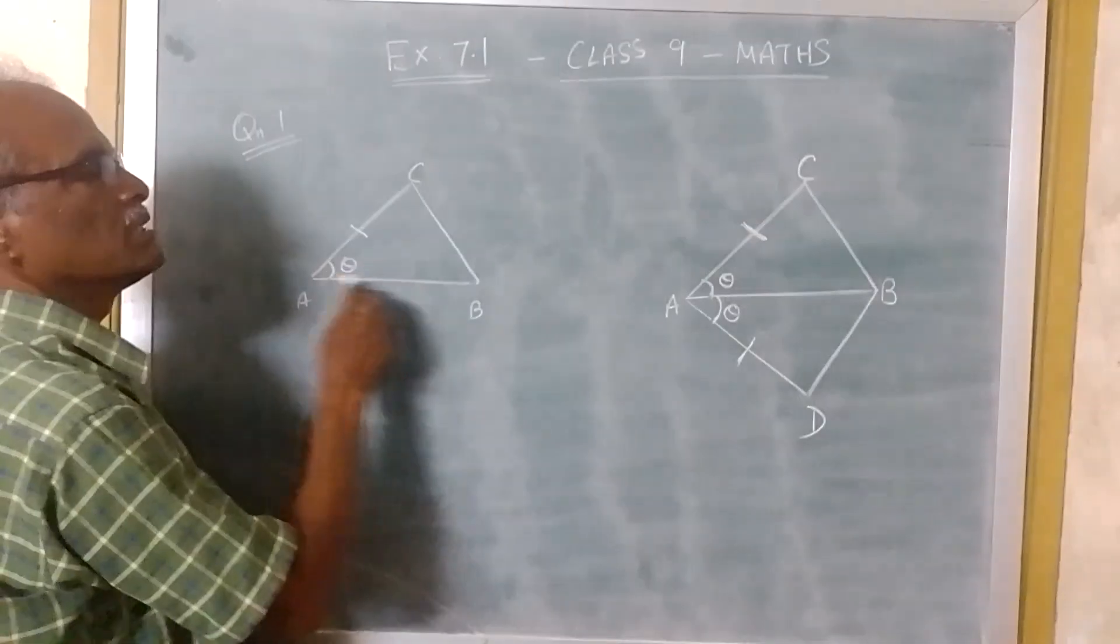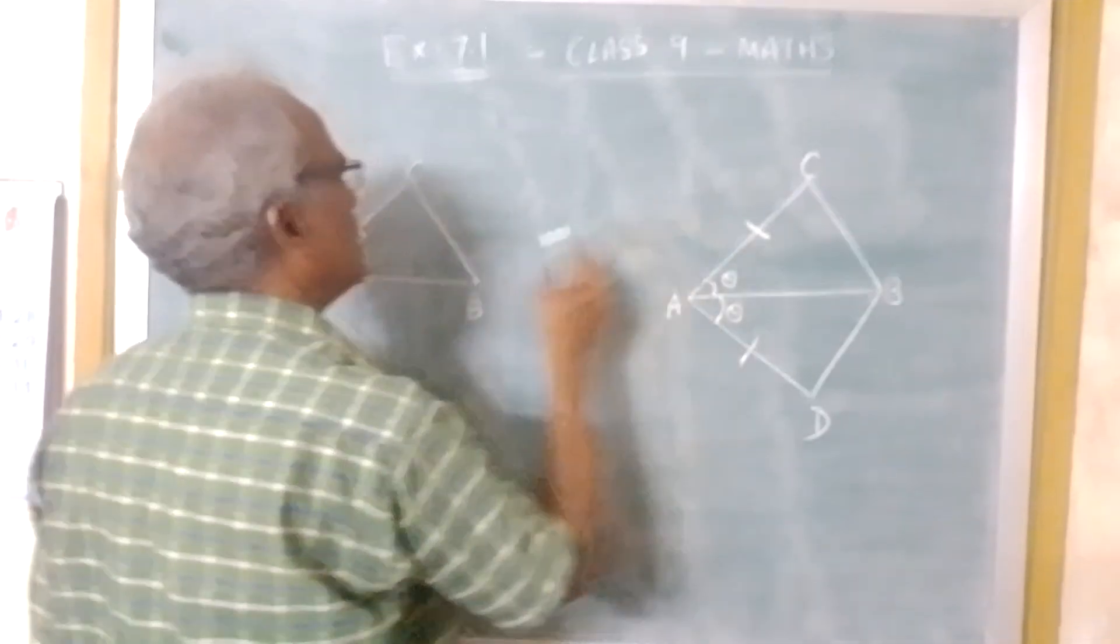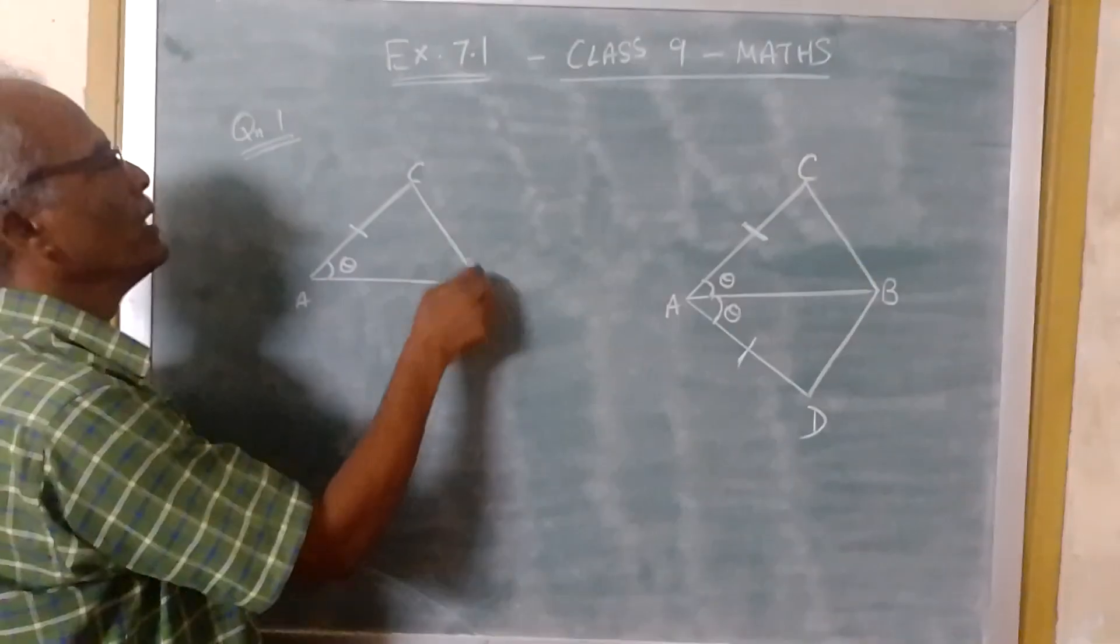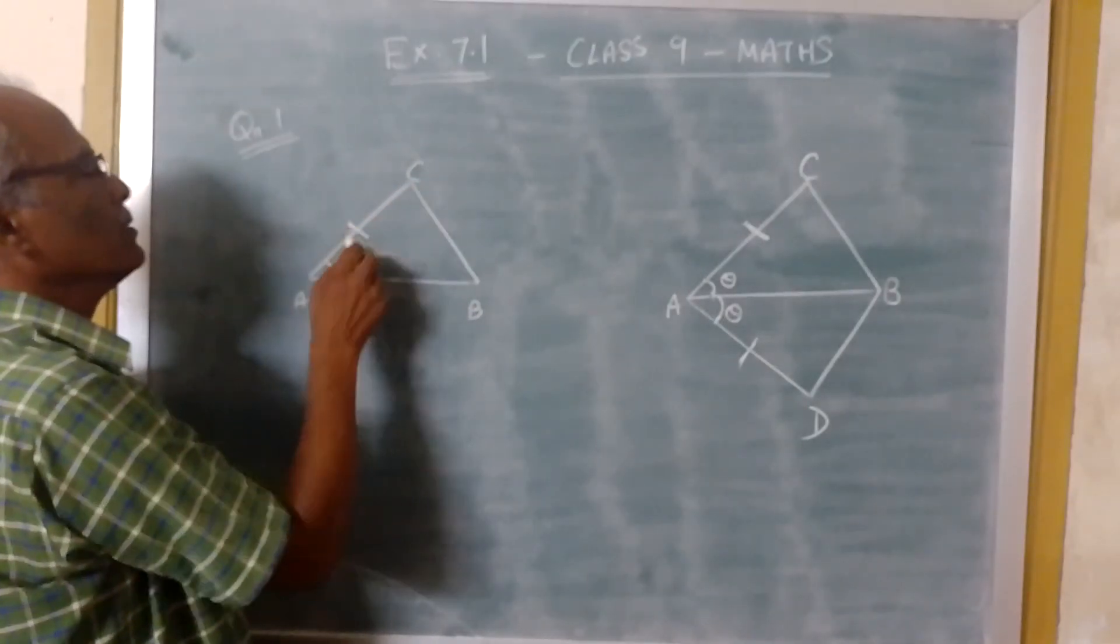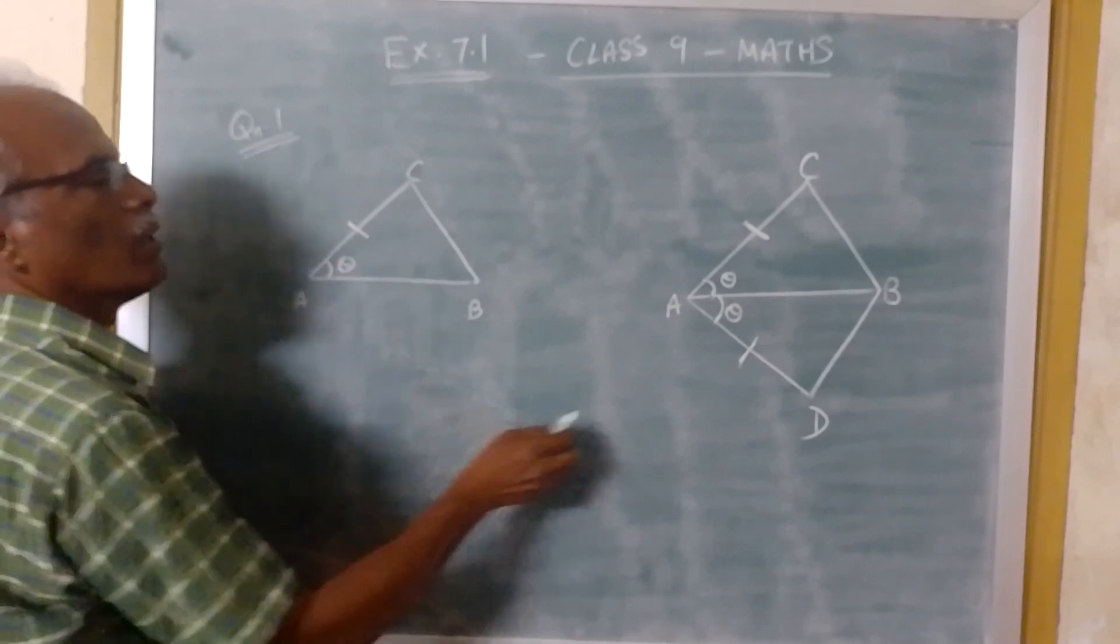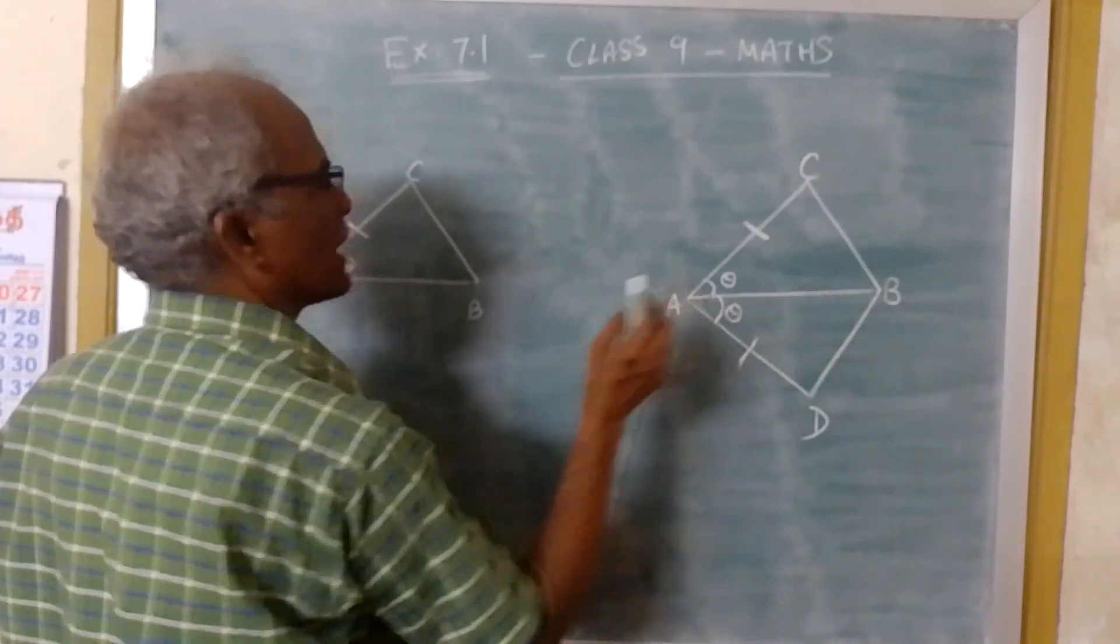Now we will draw all the diagrams. So consider the first triangle ABC: A, B, C. So this is theta. Now you draw the second diagram.